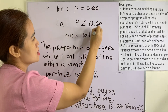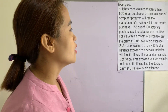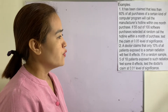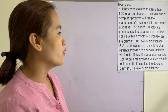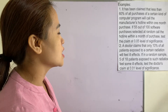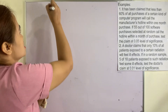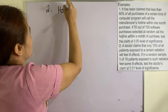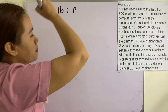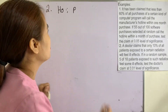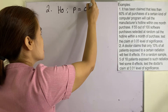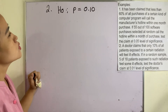Example two: A doctor claims that only 10% of all patients exposed to a certain radiation will feel ill effects. If a random sample of 18 patients exposed to such radiation shows that 5 feel some ill effects, test the doctor's claim at the 0.01 level of significance. The hypothesized value for the population proportion is 10%, so H₀: p = 0.10.